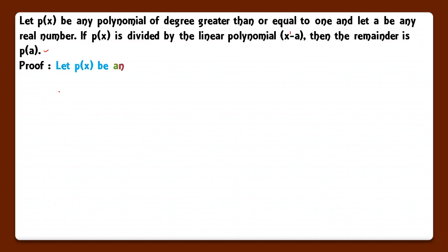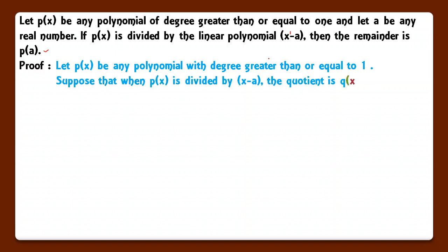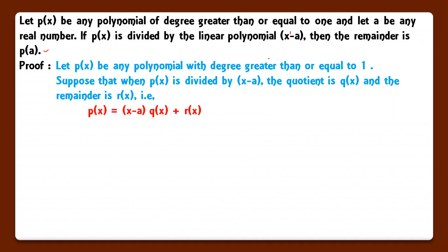Let's see the proof of the remainder theorem. Let px be any polynomial of degree ≥ 1. When px is divided by x − a, let the quotient be q(x) and the remainder be r(x). Using the division algorithm: dividend = divisor × quotient + remainder, so px = (x − a)·q(x) + r(x). Since x − a is a linear polynomial, its degree is 1.